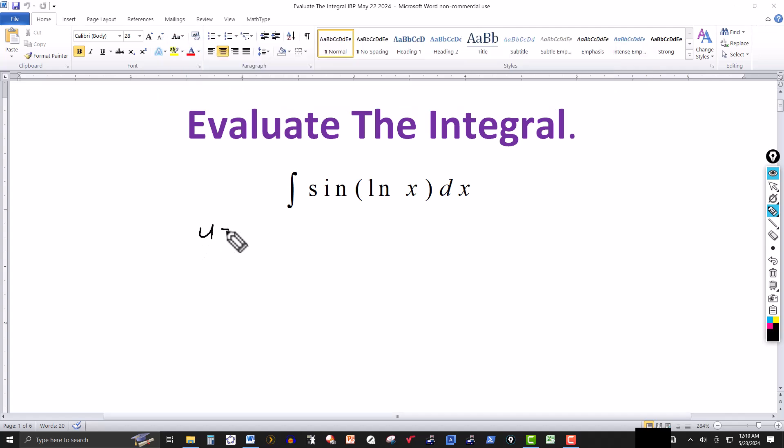So I could start off by letting u equal ln of x, and taking the derivative of both sides, we could say du equals the derivative of ln of x, which is 1 over x dx. And then multiplying by x, we could say that dx is equal to x times du.